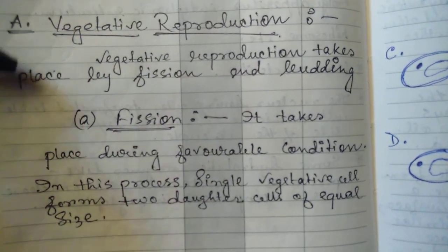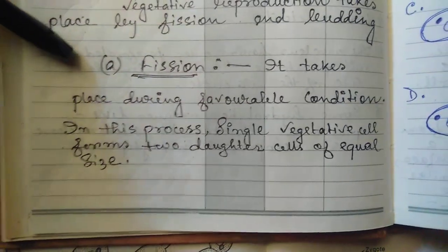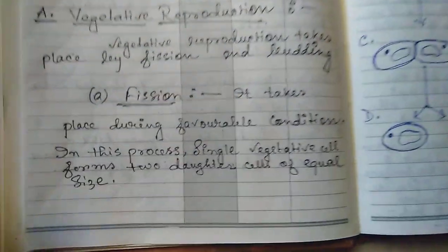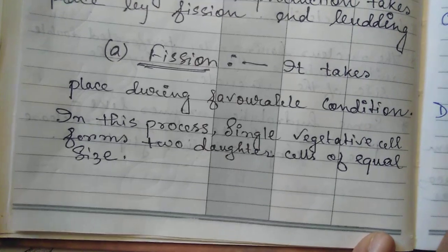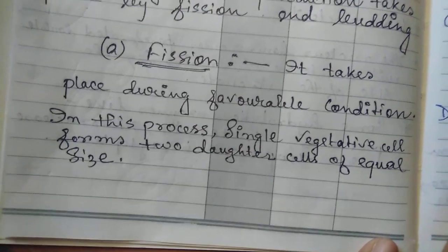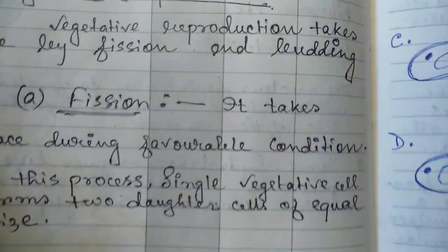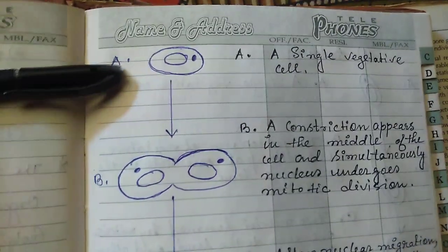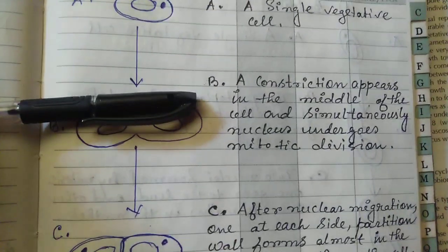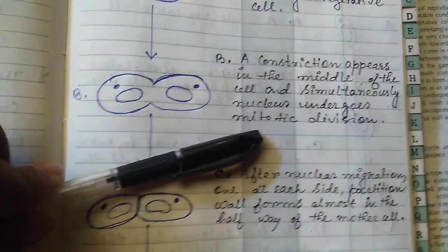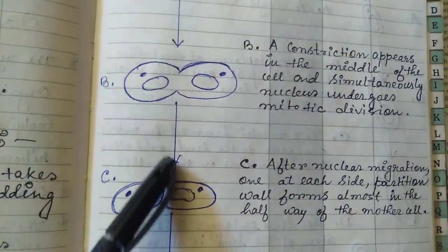In vegetative reproduction, fission is a method found in lower groups of organisms such as bacteria and unicellular organisms. In fission, a single vegetative cell forms, then a constriction appears in the middle of the cell. Simultaneously, the nucleus undergoes mitotic division — a single cell divides mitotically to form two cells.